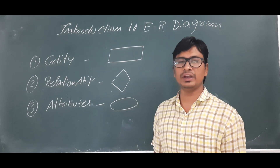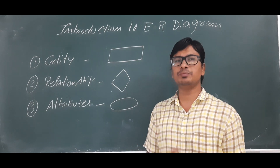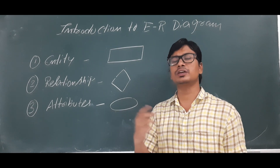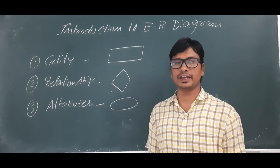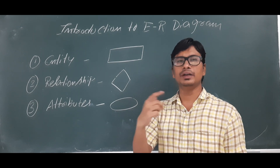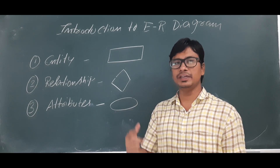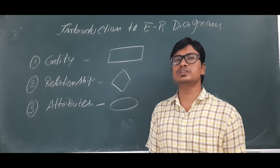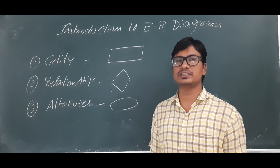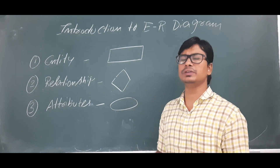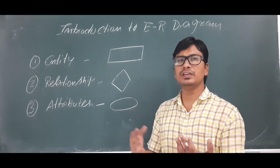For example, a student will have certain properties like roll number, name, year, and location. All these things will act as attributes. Now you can ask: where are ER diagrams useful?